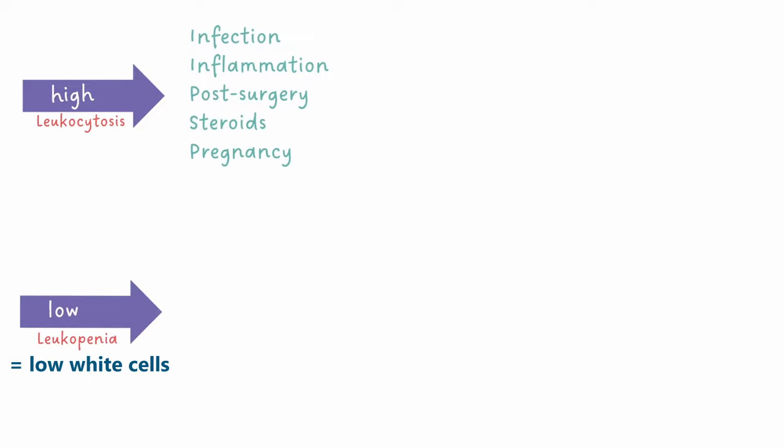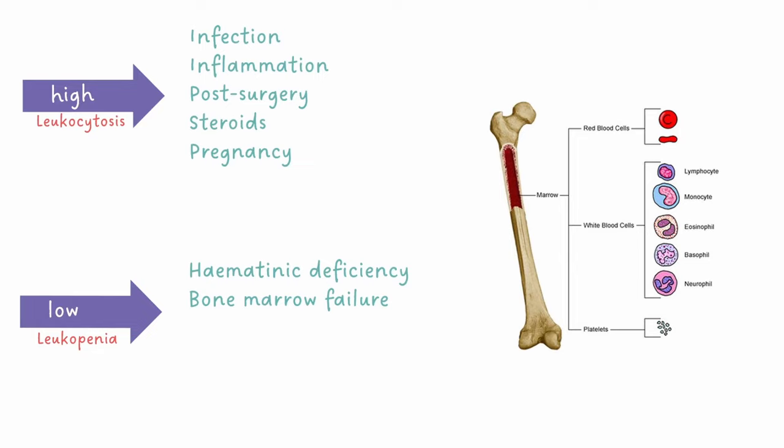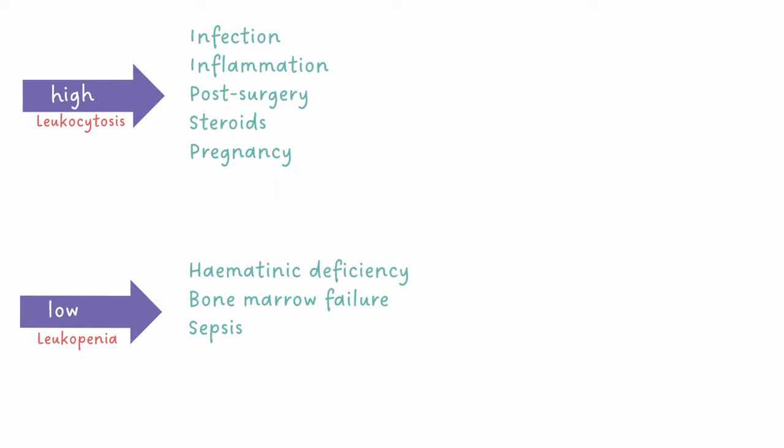Leukopenia can be caused by haematinic deficiency — i.e. B12, folate, or iron. Bone marrow failure will cause leukopenia as part of a pancytopenia, and this can have a range of causes including acute leukaemia, chemotherapy, and aplastic anaemia. Sepsis and some medications can also reduce the white cell count.